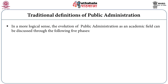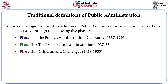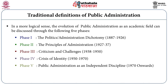In a more logical sense, the evolution of public administration as an academic field can be discussed in five phases: Phase 1, the politics-administration dichotomy, 1887 to 1926; Phase 2, the principles of administration, 1927 to 1937; Phase 3, criticism and challenges, 1938 to 1950; Phase 4, crisis of identity, 1950 to 1970; and Phase 5, public administration as an independent discipline from 1970 onwards.